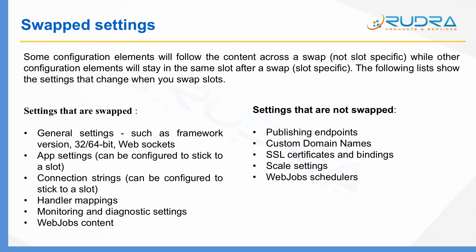The settings that are swapped include general settings such as .NET framework version, 32-bit or 64-bit mode, web socket settings, and also app settings — any key-value pairs you've added get swapped. However, you can configure app settings to stick to a slot. For example, if you have a testing connection string and a production connection string, you don't want those swapped, so you can mark them as slot-specific. Connection strings can similarly be configured to stick to a slot. Handler mappings, monitoring and diagnostic settings, and WebJobs content all get swapped.